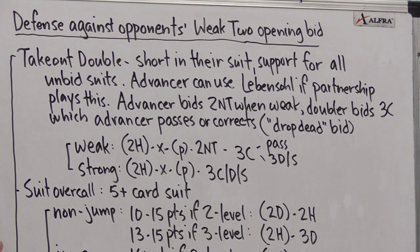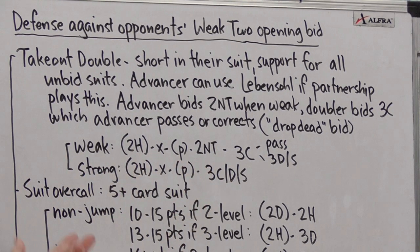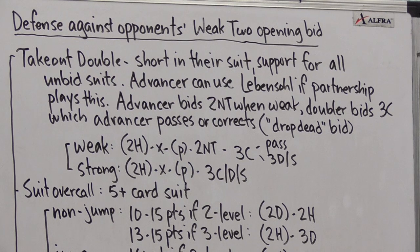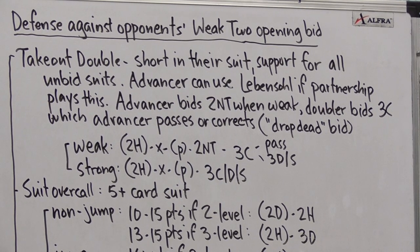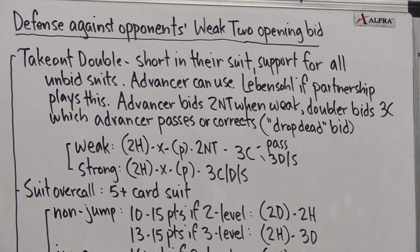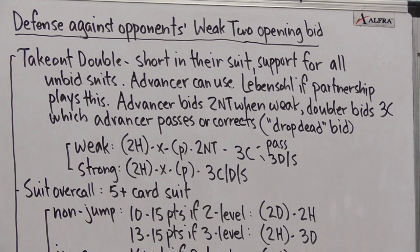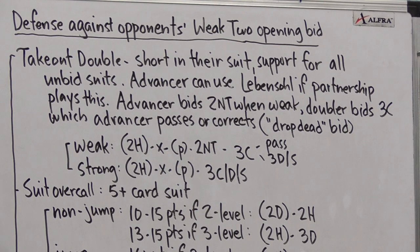On the other hand, when I'm stronger than that, and I might even be interested in game, I will bid my suit directly. So left hand opponent makes that same two heart weak two opening bid. Partner makes that same takeout double. Opener's partner passes. And if I bid three clubs, three diamonds, or three spades directly, I'm saying I have a better hand. And I'm inviting us to go on.